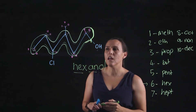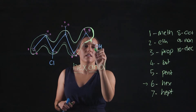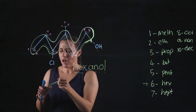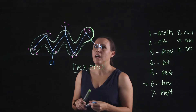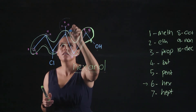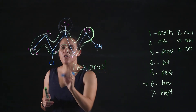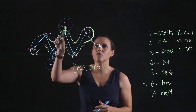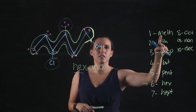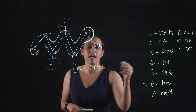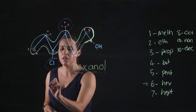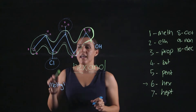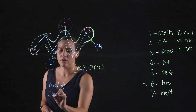So hexanol accounts for this alcohol and this backbone. I have extra things coming off it: I have this group up the top, which is a one-carbon group coming off the main chain, so it's a methyl. And I've got this chlorine here, which is a chloro.